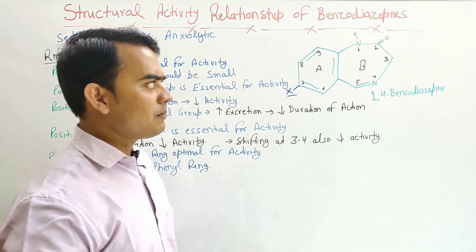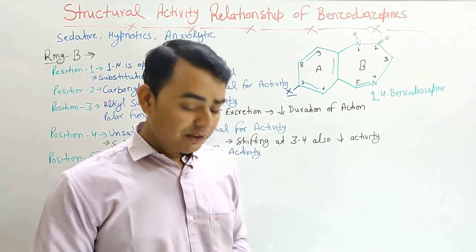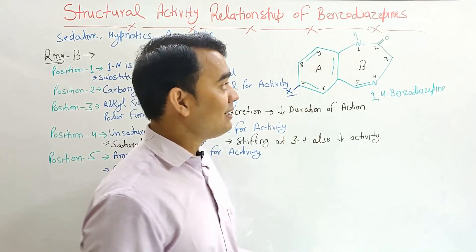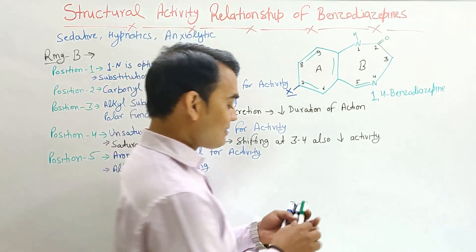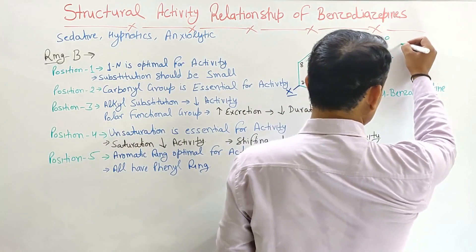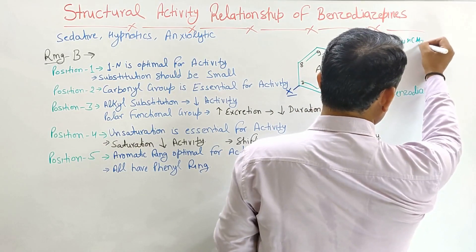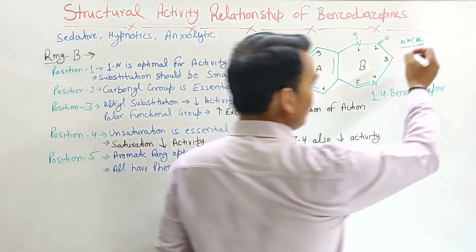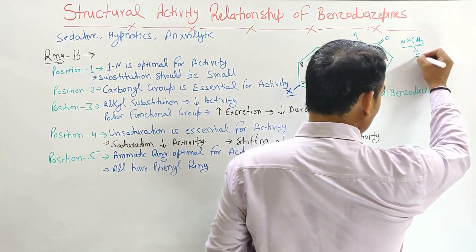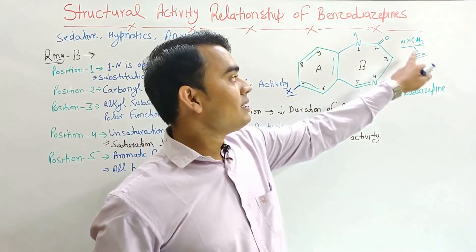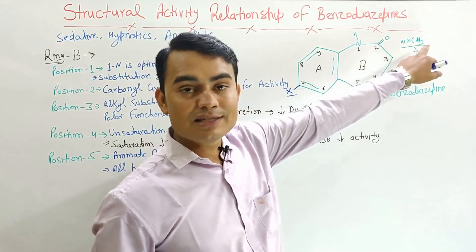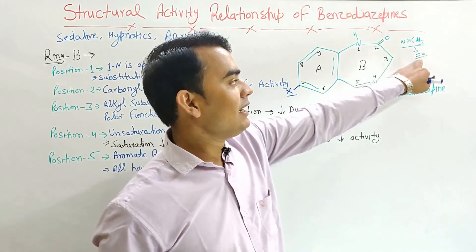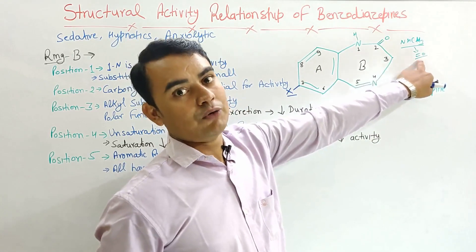There is also an exception: chlordiazepoxide has a methylamine substitution and does not have a carbonyl group — instead it has NH-CS3. But on metabolism, this NH-CS3 is converted into the carbonyl group. So chlordiazepoxide has the NH-CS3 substitution which, on metabolism, is converted into nordiazepam that will have the carbonyl group.